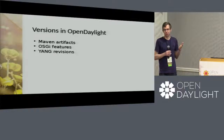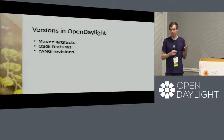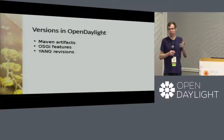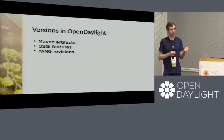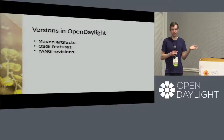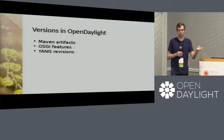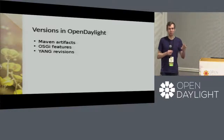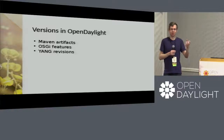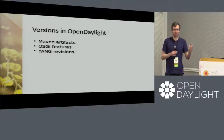OSGi features and Karaf features are supposed to be the same thing. Yang revisions aren't semantically versioned, and we tend not to bump revisions anyway because when you add a new feature it changes your package name and you have to rewrite all your code. There are a bunch of things we need to figure out before we can have a consistent story for all of this.